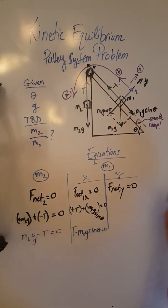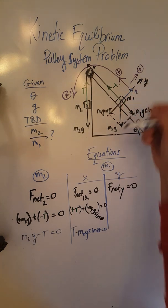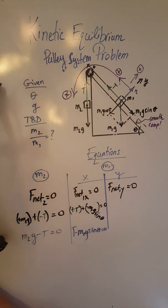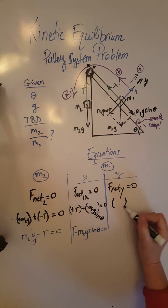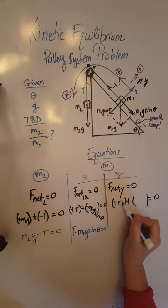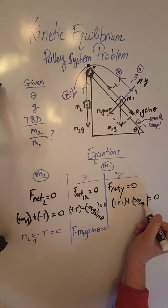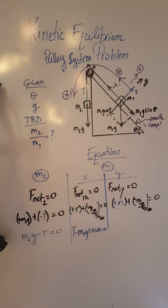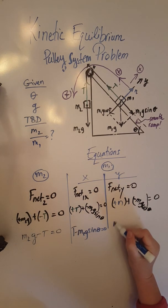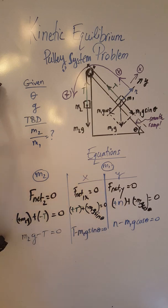For the y equations, I chose positive to be away from the ramp surface as shown on the diagram. Therefore N is positive and M1g cosine theta is negative. The vector sum of those two forces equals zero, giving us N minus M1g cosine theta equals 0. So now we have three equations to consider.